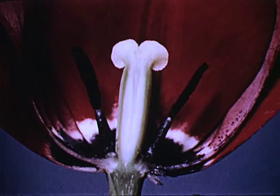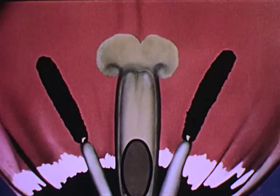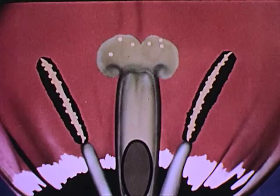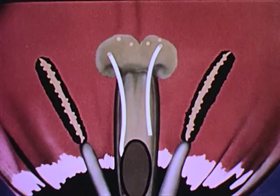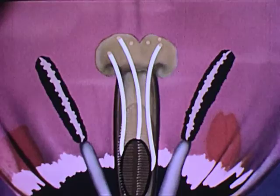Pollination takes place in two ways: by self-pollination and by cross-pollination. Here we'll watch self-pollination as shown by animated drawings. When pollen grains land on the sticky stigma of the pistil, they send tubes down the style to the ovary which contains the ovules. The pollen tubes bearing male cells enter the ovules and fertilization takes place.